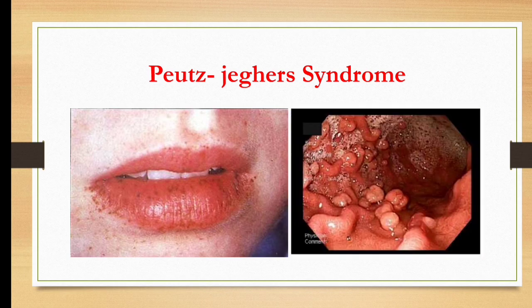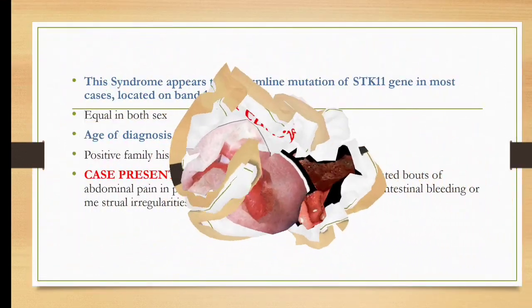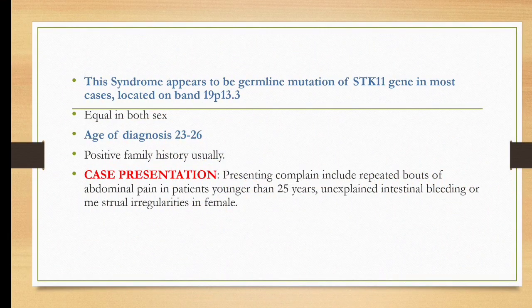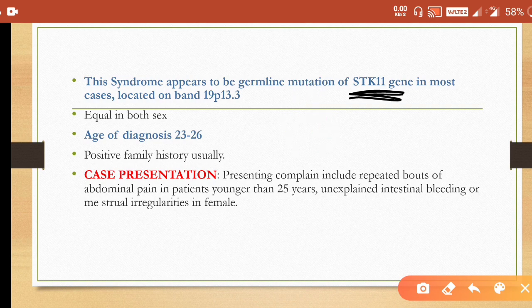In the second image you can see the polyps. This syndrome appears to be due to a germline mutation of the STK11 gene — this is an important MCQ point. The gene responsible for Peutz-Jeghers is the STK11 gene in most cases, located on 19p13.3. You must remember the gene name. It has equal distribution in both sexes and age of diagnosis is 23 to 26 years, mainly mid-life, with a positive familial history.